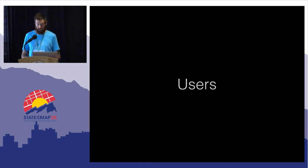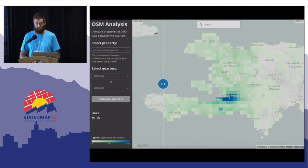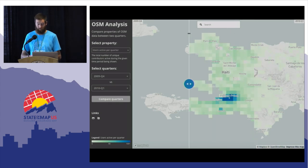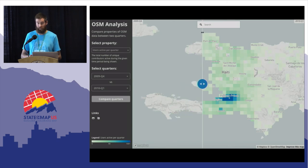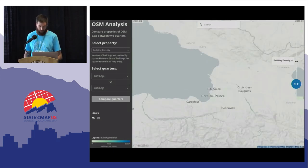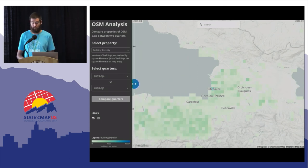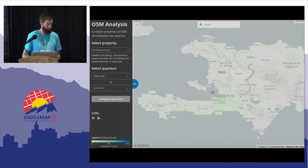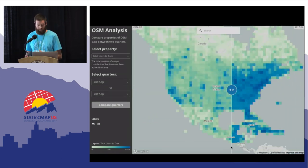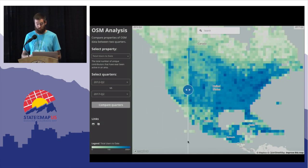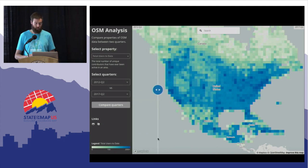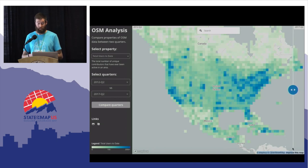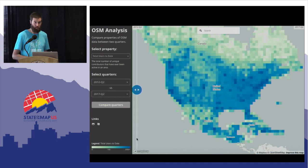Let's switch gears and look more closely at users. This particular dataset and the familiarity of the story makes this a good case study. Here we're comparing the number of users active per quarter in Haiti between the last quarter of 2009 and the first quarter of 2010 when the earthquake struck, and here's the result of the building density improvement over that time. Zooming back out, looking at the total number of unique contributors to date in 2012 compared to 2017 — 2012 does not look too bad, but 2017 just blows that out of the water.